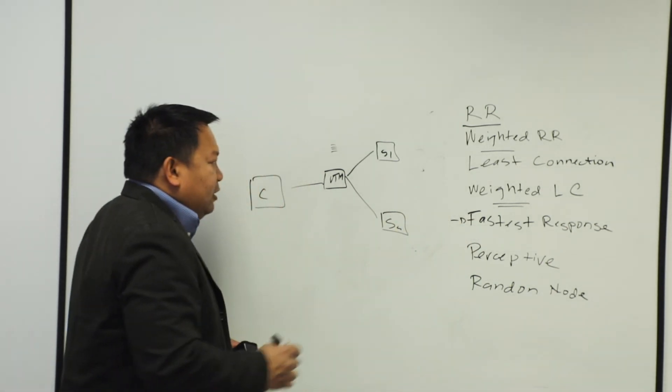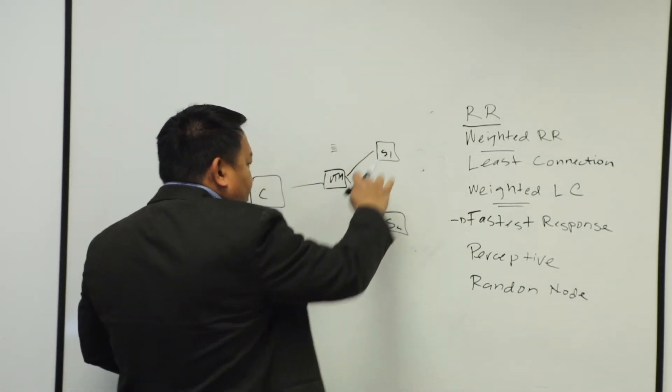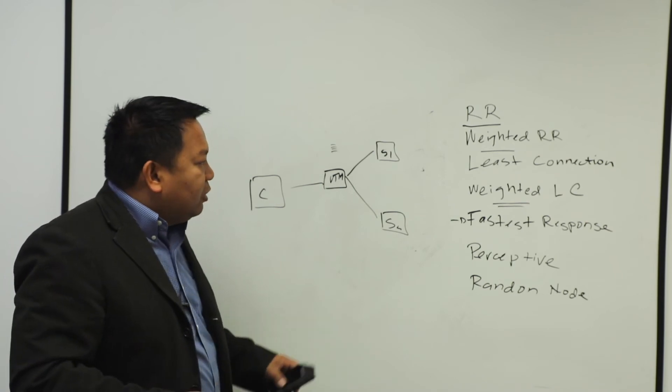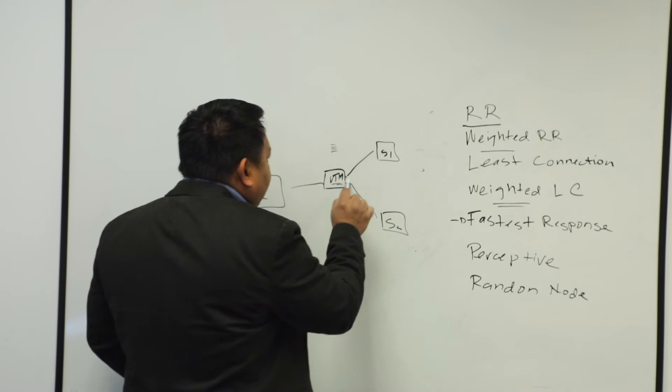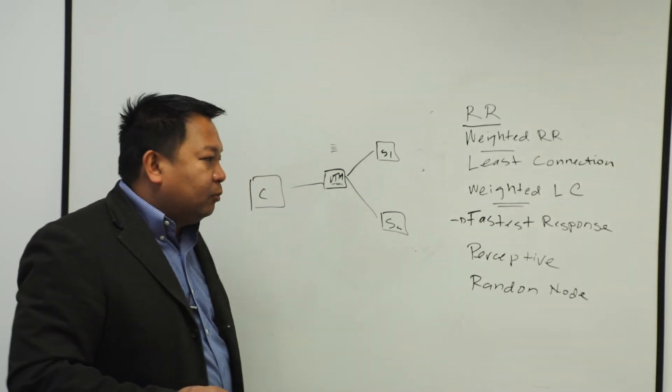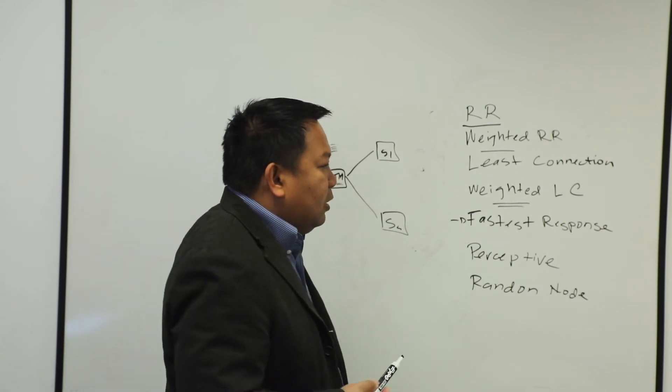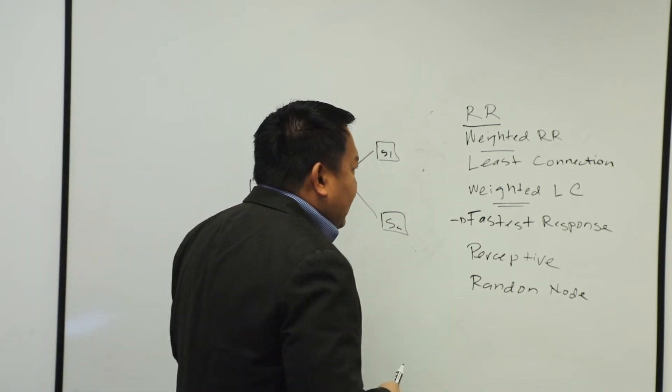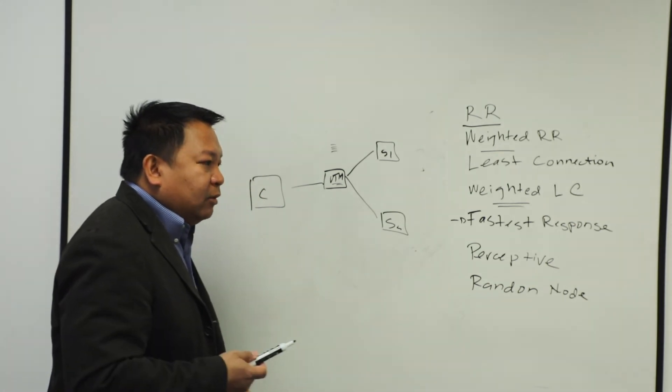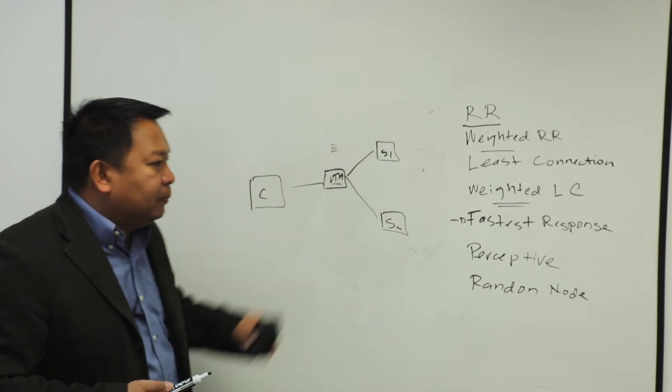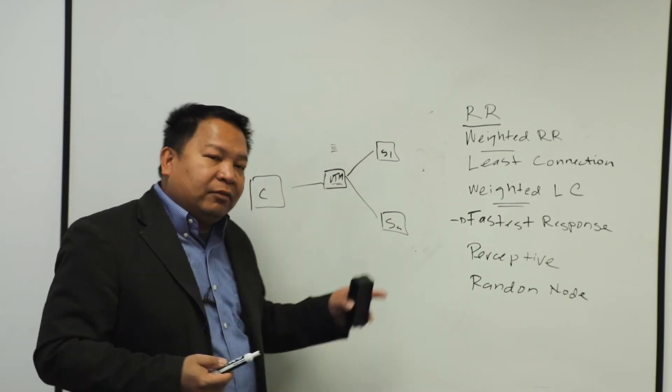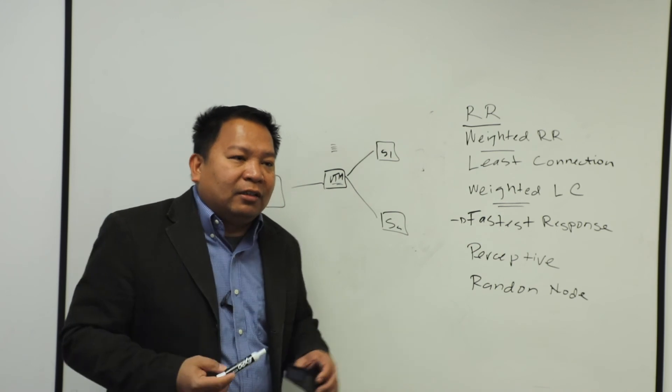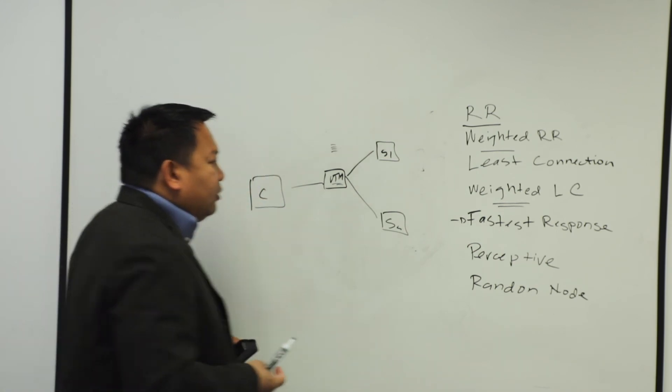Going back to the fastest response time, the VTM will send requests to these servers, a test request, and calculates how fast did you come back? 20 milliseconds, 200 milliseconds, and based on those information, it will define on the VTM that, oh, indeed, Server 2 is the fastest one. The next request, I'm going to be sending it to Server 2 instead, because I believe it can react to the request much faster. Be careful as well, unexpected behavior on low traffic. If you have very low traffic, fastest response time could be a problem because it calculates based on the number of requests. That is your fastest response time.